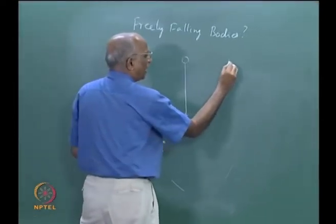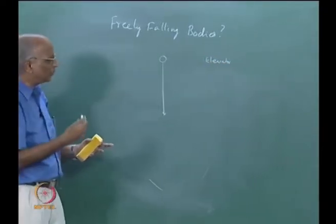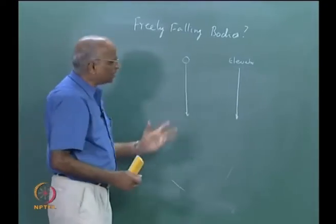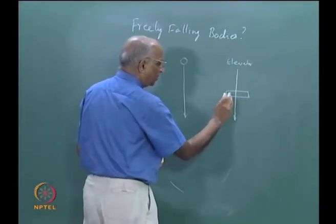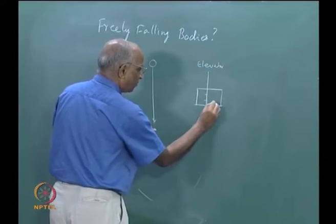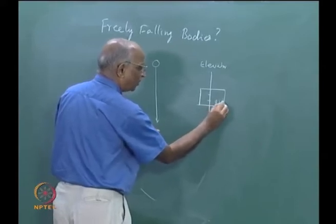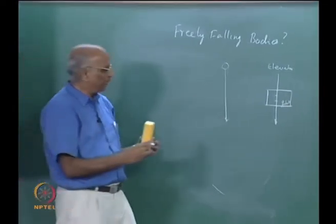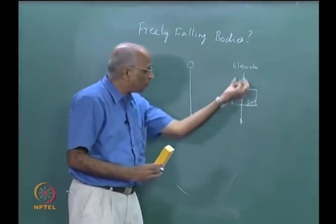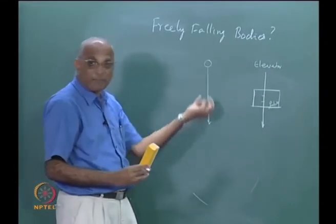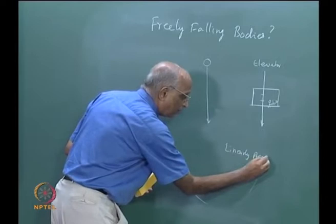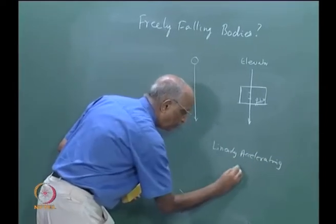Let us take two examples. Let us assume I have a stone - it falls freely, but let us assume there is no air resistance because we are talking of space. I also take an example of an elevator or lift. Let us say the elevator falls freely. I am in the elevator, in my hand I hold a cup of tea. This stone is freely falling and this is not an inertial frame of reference because it is picking up acceleration - it is a linearly accelerating frame of reference.